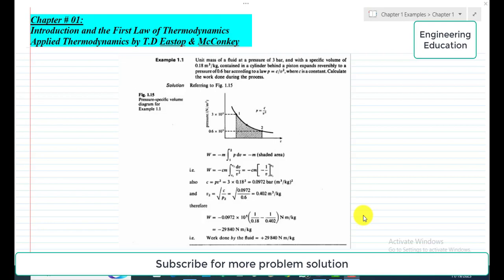Unit mass of a fluid at a pressure of 3 bar and with a specific volume of 0.18 cubic meter per kilogram, contained in a cylinder behind a piston, expands reversibly to a pressure of 0.6 bar according to a law P equals C by V square, where C is a constant. Calculate the work done during the process.